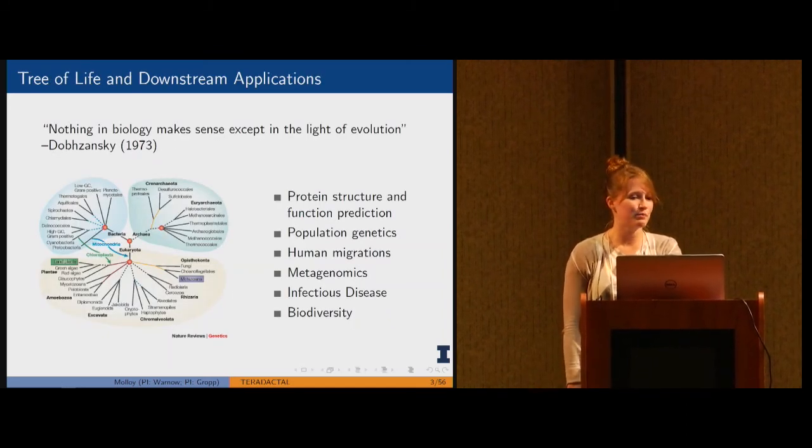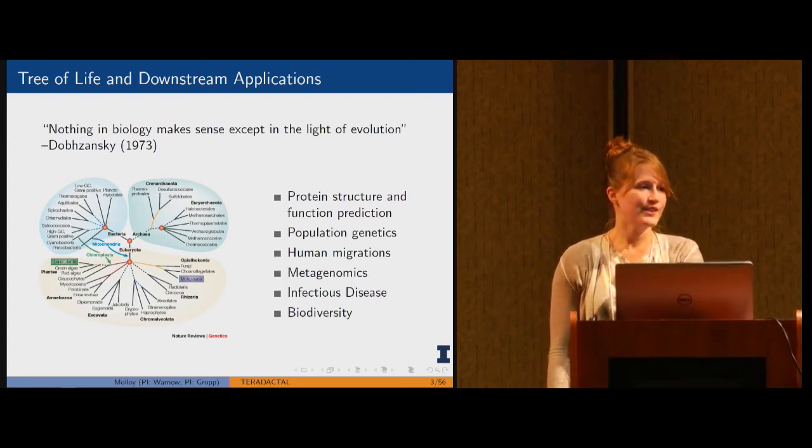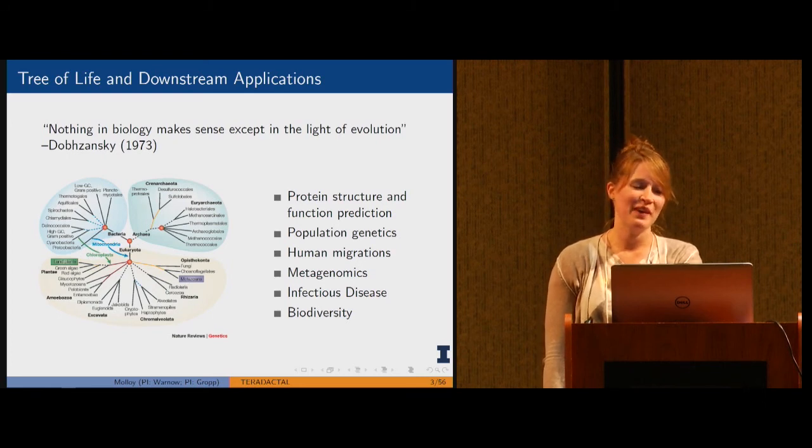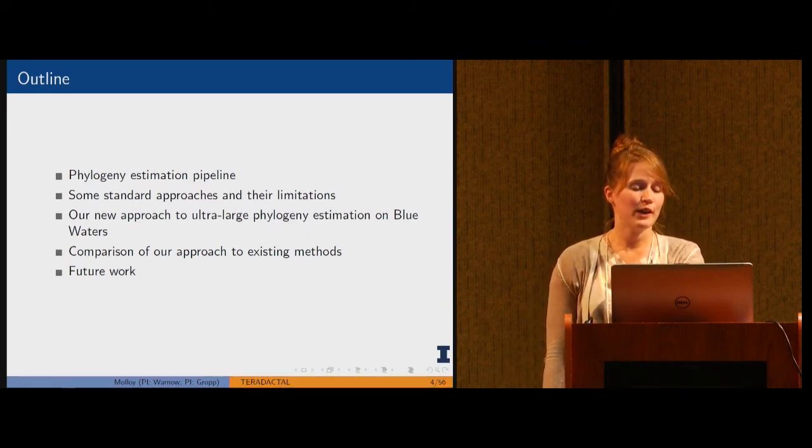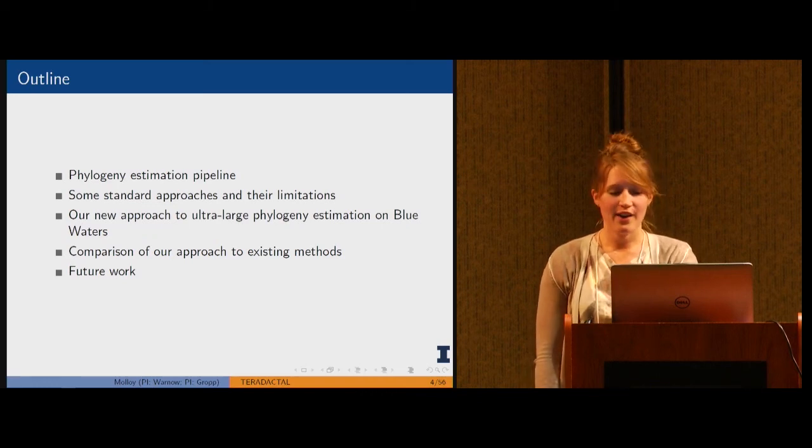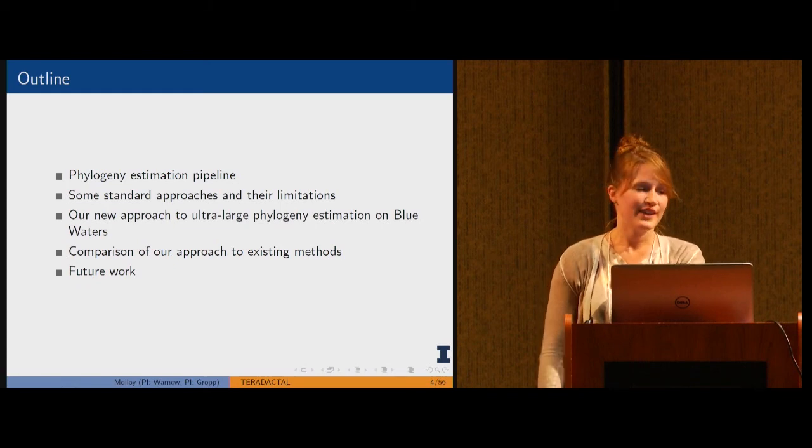There's this famous quote that says nothing in biology makes sense except in the light of evolution. Besides reconstructing the tree of life, there are many downstream applications to large scale phylogeny estimation. If I haven't gotten you excited about large genomic datasets and the tree of life, keep in mind that this talk is really about how do you take an algorithm that is not embarrassingly parallel and come up with an approach to solving this problem that will work on systems like Blue Waters.